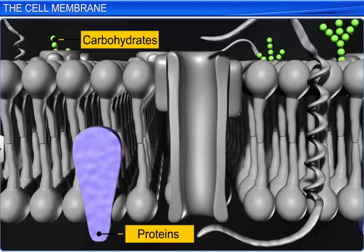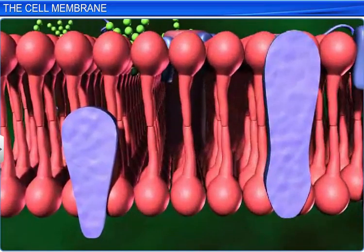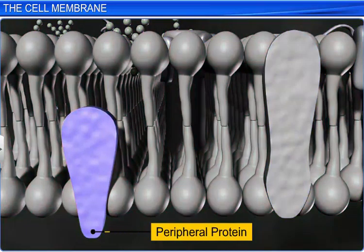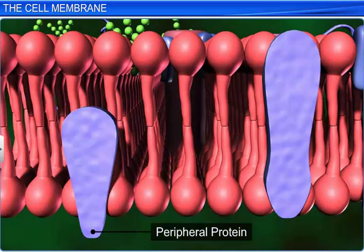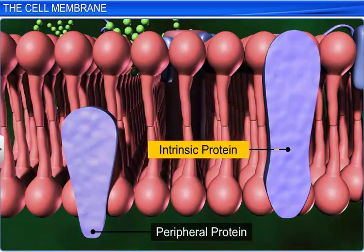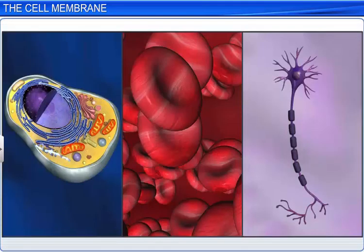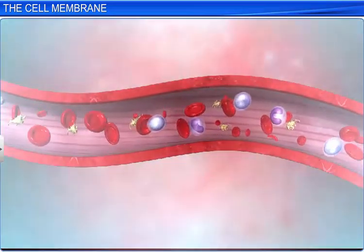Moreover, the proteins are arranged in two forms: peripheral and intrinsic. Peripheral proteins lie on the surface of the membrane and can be easily removed by physical methods. On the other hand, intrinsic proteins are totally or partially embedded in the bilayer and can be removed only after disrupting the entire membrane. Scientists also deduced that the ratio of proteins to lipids varies greatly between different types of cells. For instance, the cell membrane of red blood cells is 52% proteins and 40% lipids.